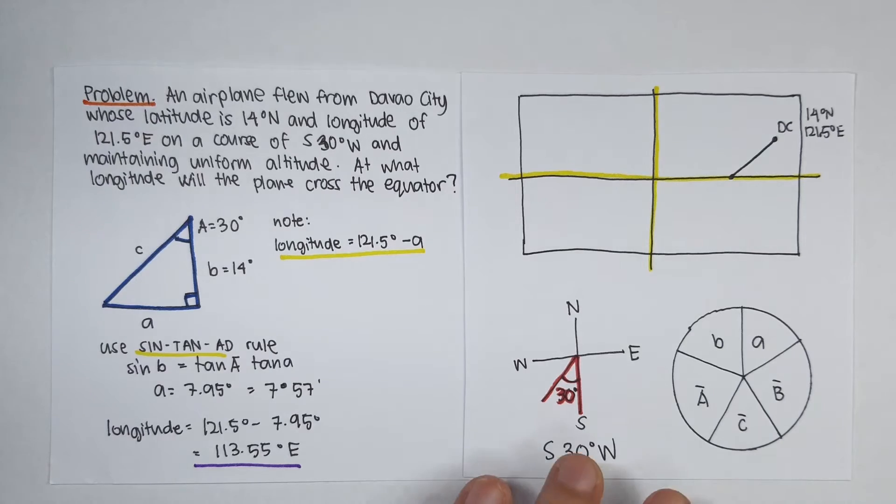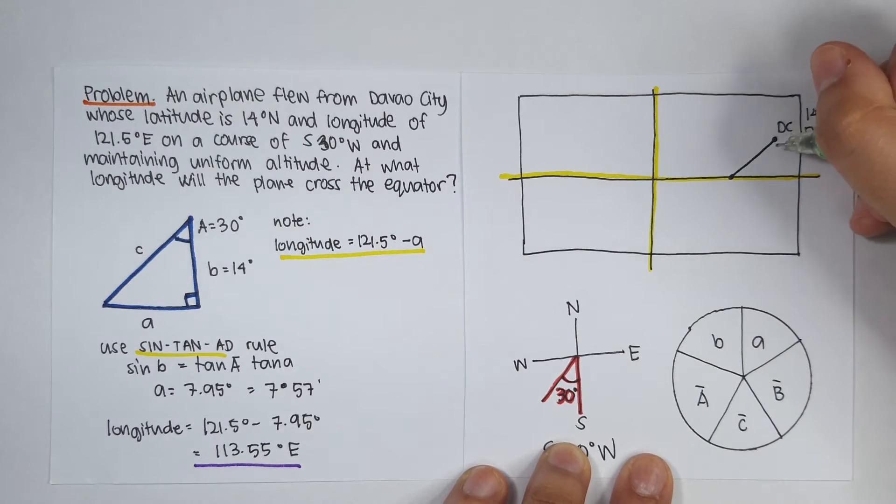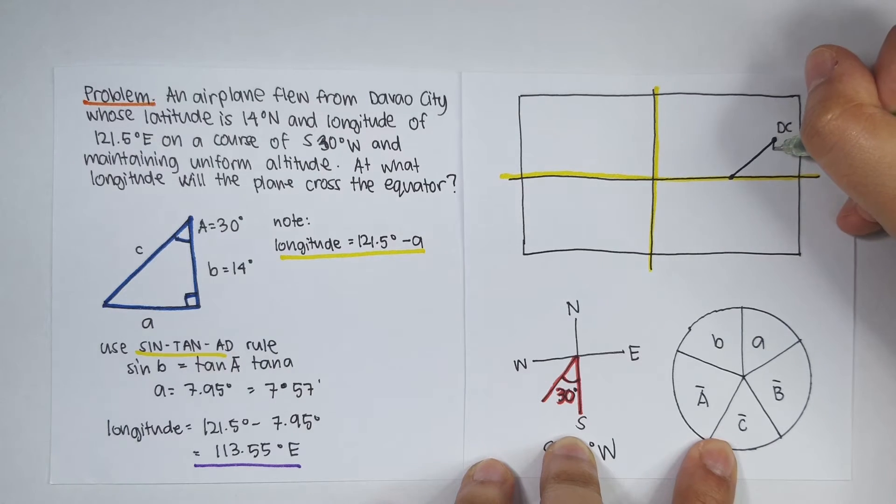Next, let's draw our spherical triangle. And notice that if we draw a line from Davao City directly downward to the equator, this angle here is 90 degrees.